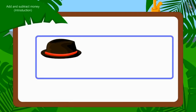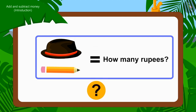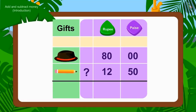The cap is Rs. 80 and the pencil is Rs. 12.50. Children, can you tell how much money will they have to pay to buy the gift? What operation do we have to use to do this? Absolutely right — Addition!